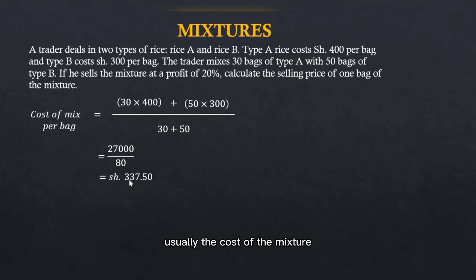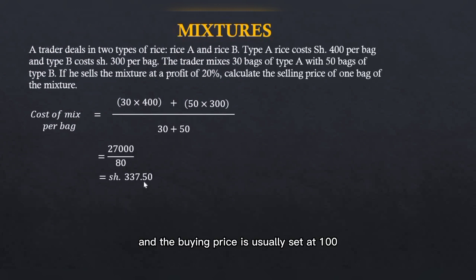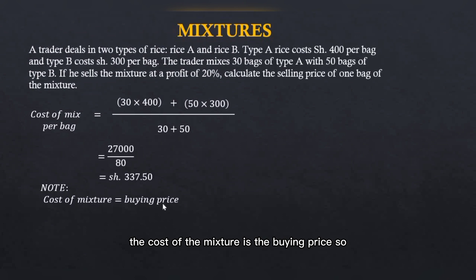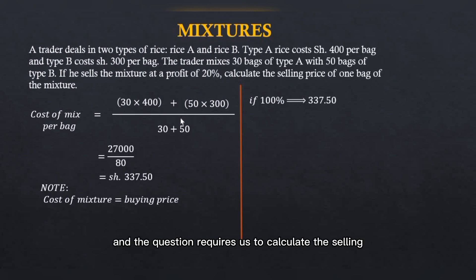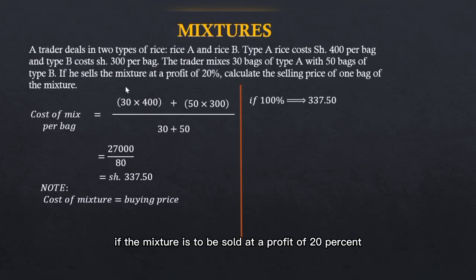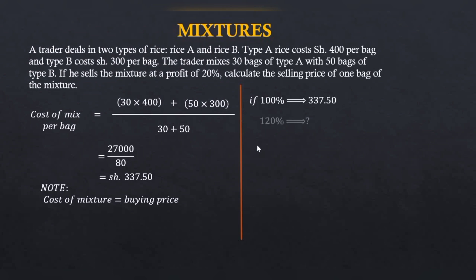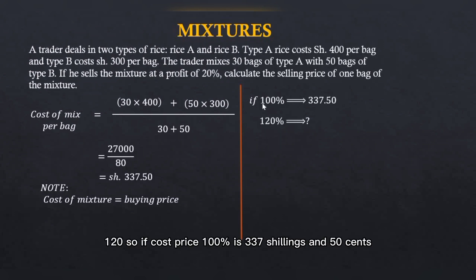The cost of the mixture forms the cost price, or the buying price, which is usually set at 100%. So if the buying price — set as 100% — is 337.50 shillings, and the question requires us to calculate the selling price of one bag of the mixture at a profit of 20%, we add 20 to 100 to get 120%.